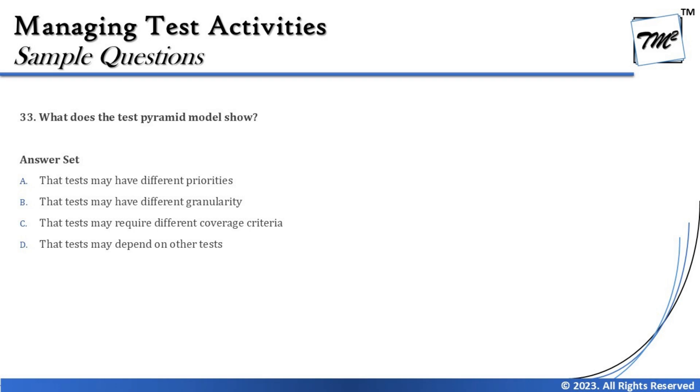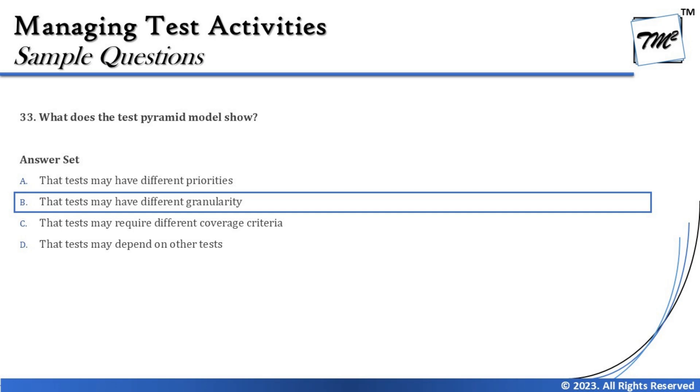You may say all four things are important for testing — and that's true. But the point is: is this what the test pyramid gave you? The answer is no. We were supposed to find what is relevant to the test pyramid. So the right answer for this question is B — that tests may have different granularity, which is certainly represented and displayed by the test pyramid model.